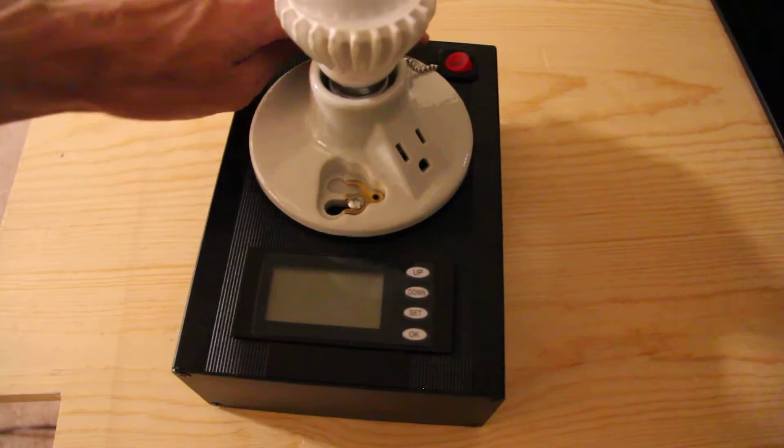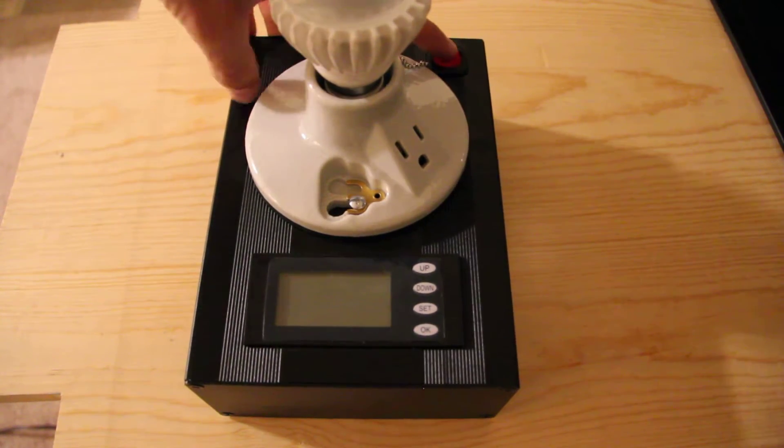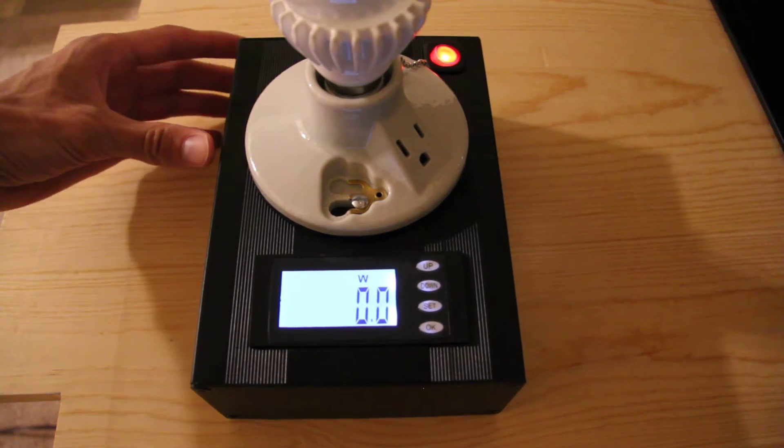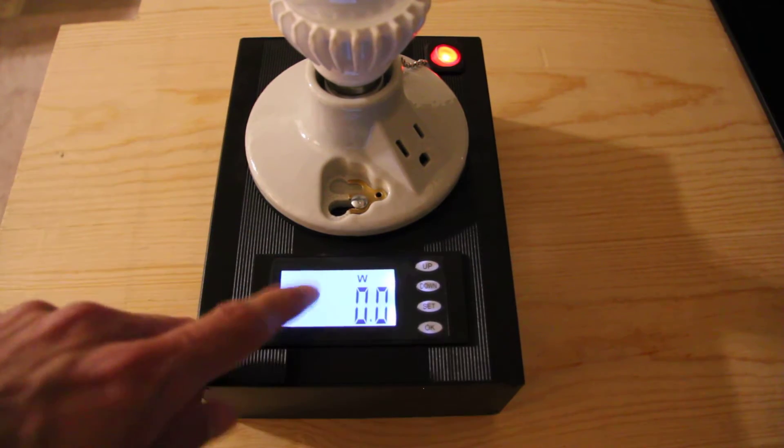So first thing I have to do is turn on the box itself with this switch back here. That will activate the display. And right now the lamp is turned off so it should show 0 watts.